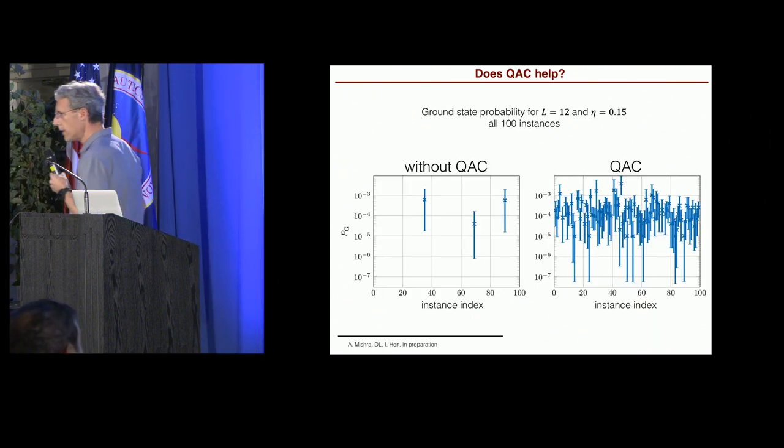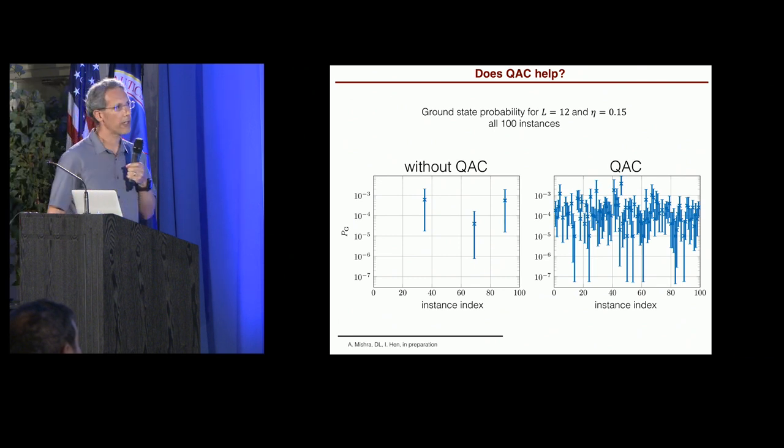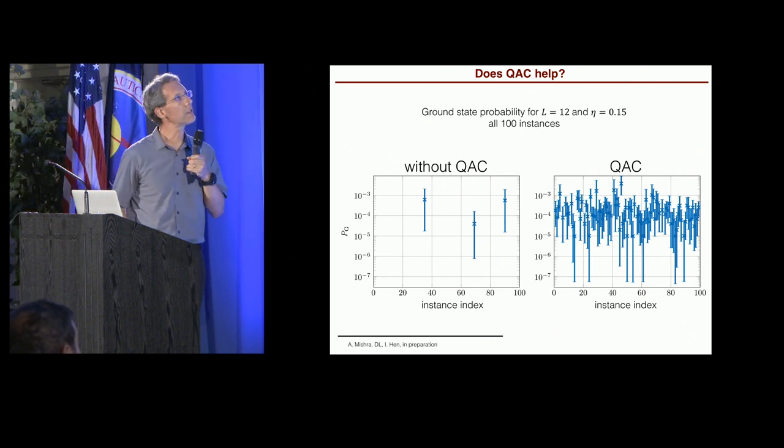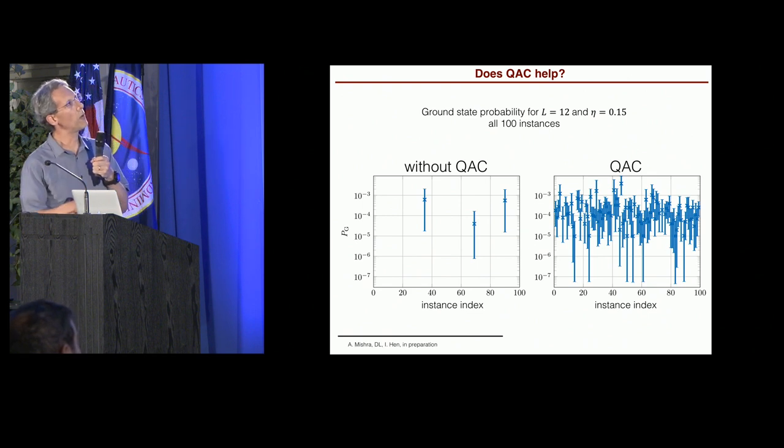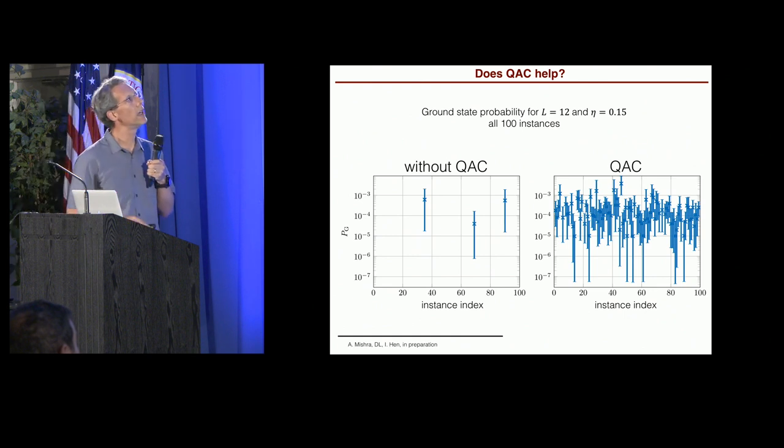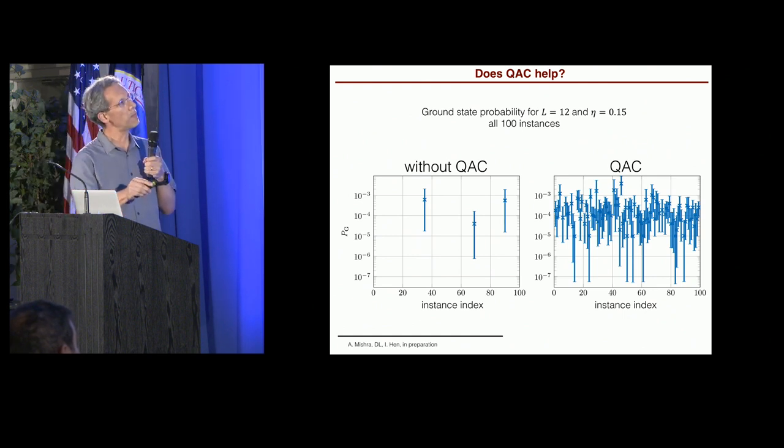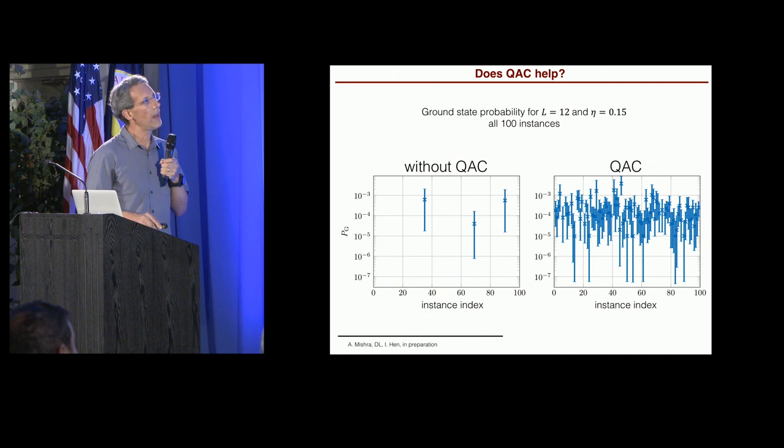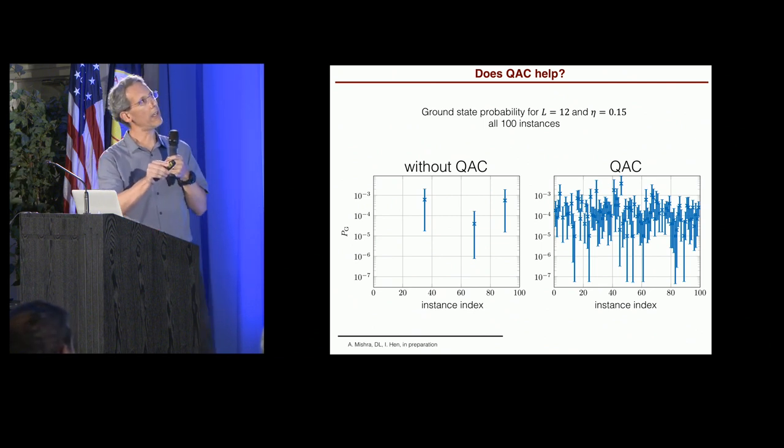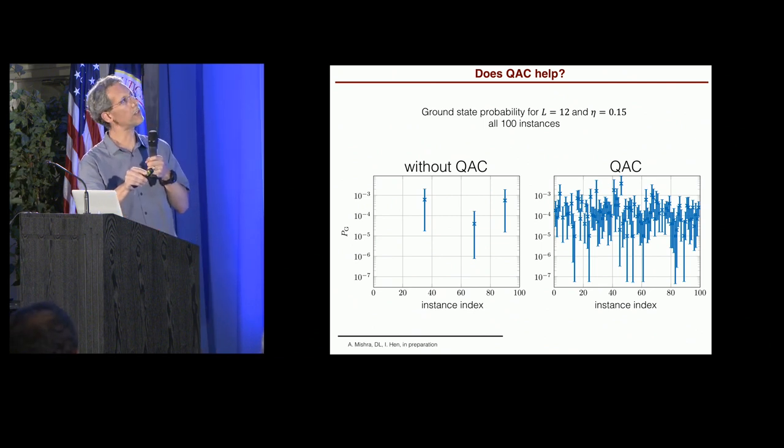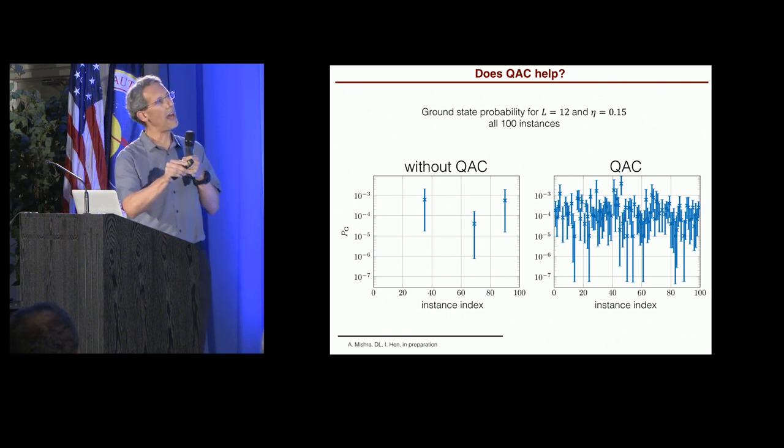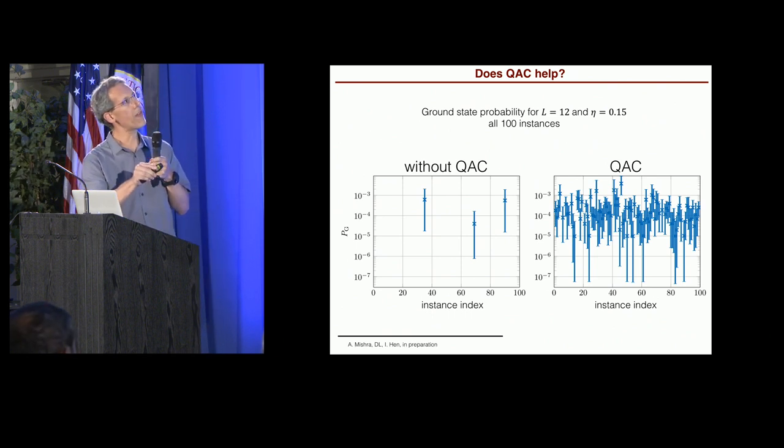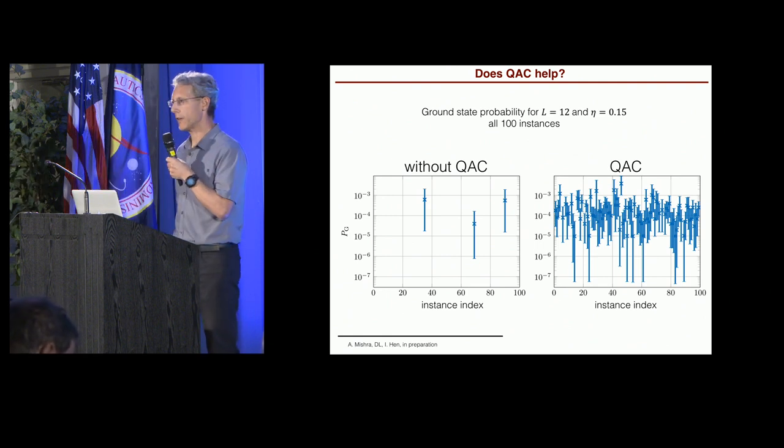Okay. So does it work? Does it help overcome the problem of J-Chaos? So this is the most extreme example. This is at the largest size with the largest amount of noise. And this is the success probability for all 100 instances. So this is just the index of each instance. And in this case, when we're looking at the largest size where the problems are hardest and the noise is the highest, you see that without doing the quantum annealing correction, only three instances were solved ever out of 100. Every single other instance was never even solved.